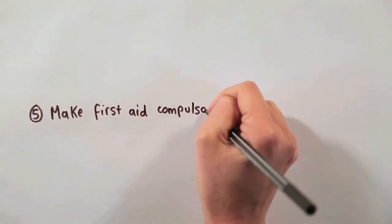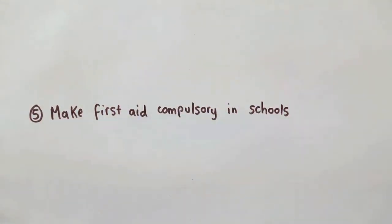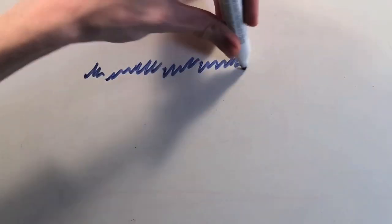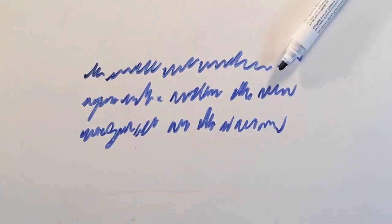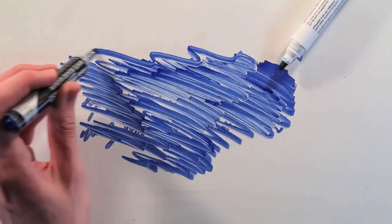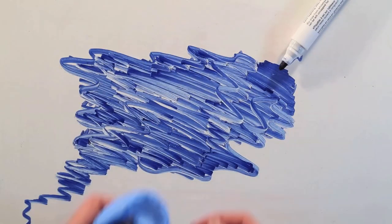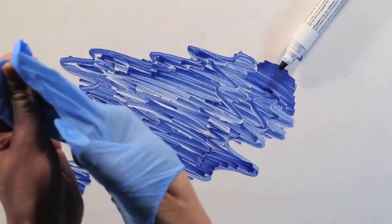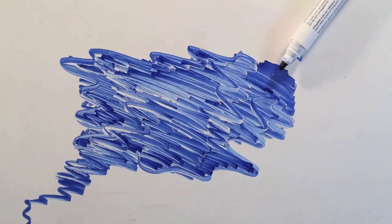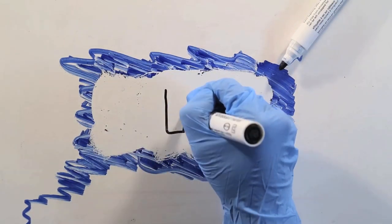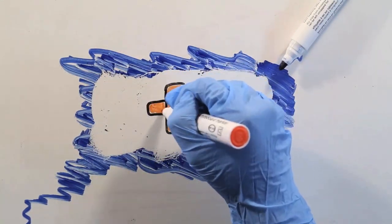5. Make first aid compulsory in schools. I think it's potentially just adding more paperwork and time for teachers in schools. I think first aid should be made compulsory in schools because a lot of people are going out doing stupid things and if something was to happen to them many people wouldn't know what to do.